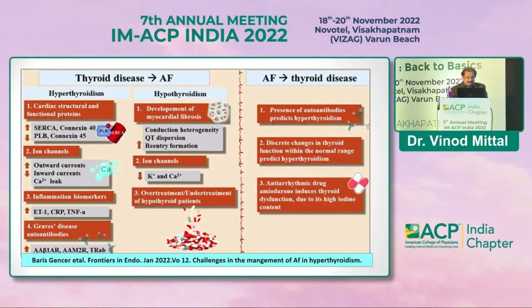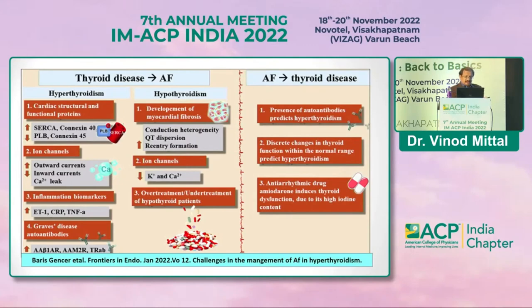Hyperthyroidism leads to AF through cardiac structural abnormalities, ion channel changes, and inflammation. In Graves' disease, autoantibodies can directly cause atrial fibrillation. Interestingly, hypothyroidism may sometimes cause AF as well. Importantly, when a patient presents with AF, we should also be looking for hyperthyroidism or other thyroid disorders.